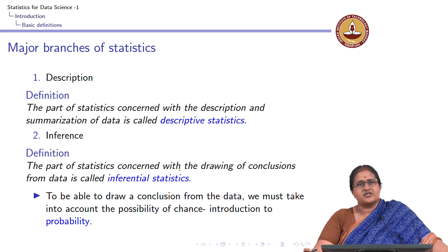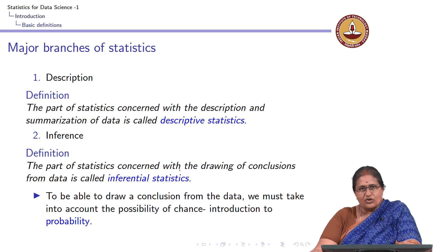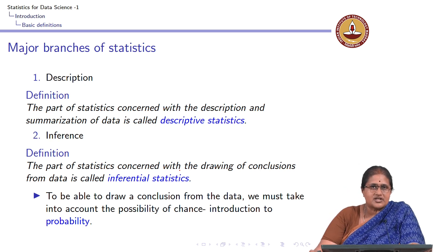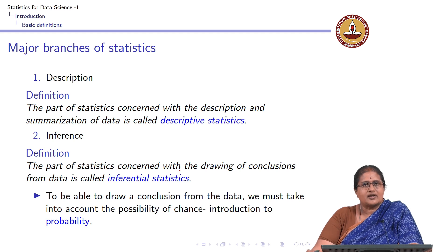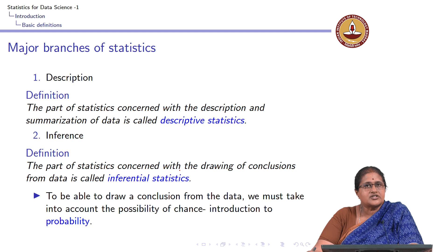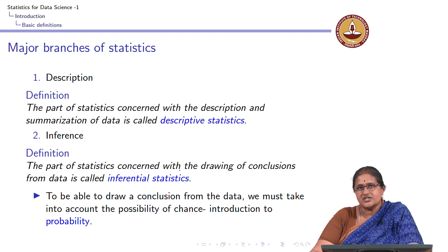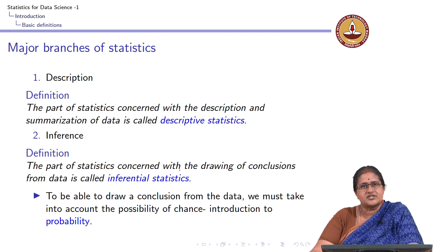If you look at the classification of statistics, even though there are newer branches, you may broadly classify the main branches of statistics as two. One is describing data — the part of statistics concerned with description and summarization of data, more popularly referred to as descriptive statistics. The part of statistics concerned with drawing conclusions from data is called the inferential statistics branch — that is, you want to infer from data.